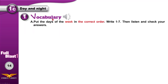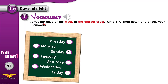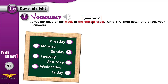Vocabulary. Put the days of the week in the correct order. A week contains seven days. Correct order means which day comes first — it's Sunday. What comes after Sunday? It's Monday. Write 1 to 7, then listen and check your answers. Do that now.